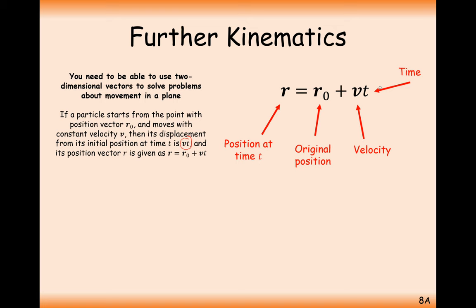You can liken r = r₀ + vt to y = mx + c. The plus c part is like where we start — that's r₀. The m is like the direction vector we travel in — that's v. And x is the number we choose to plug in, just like t. That would take us further from the starting position in a direction evaluated by m.